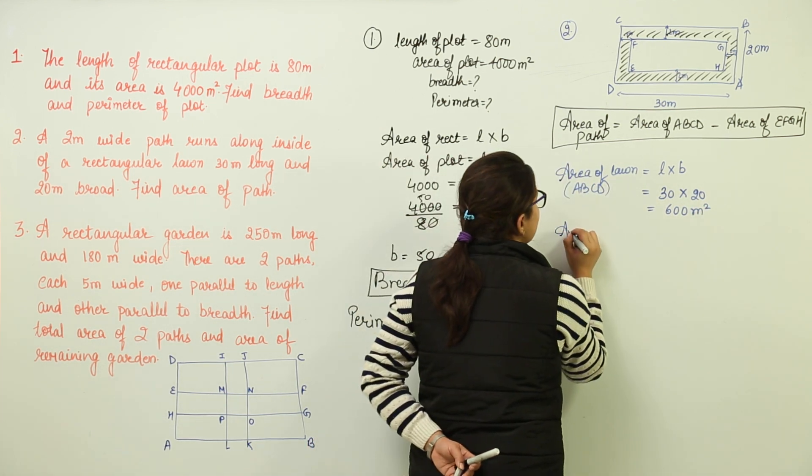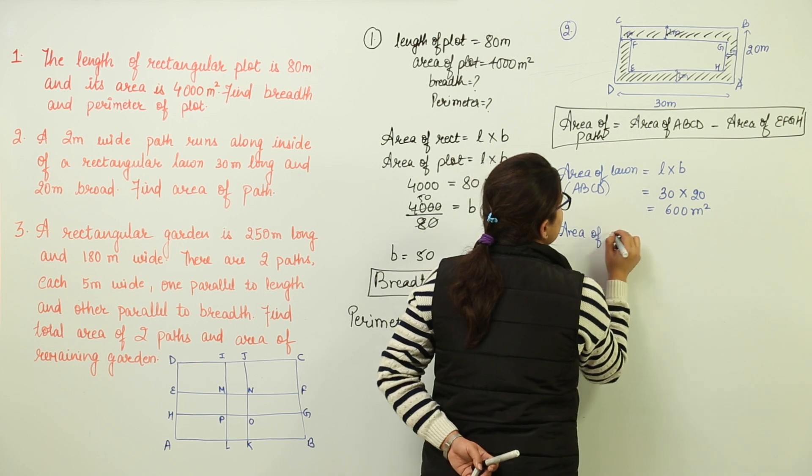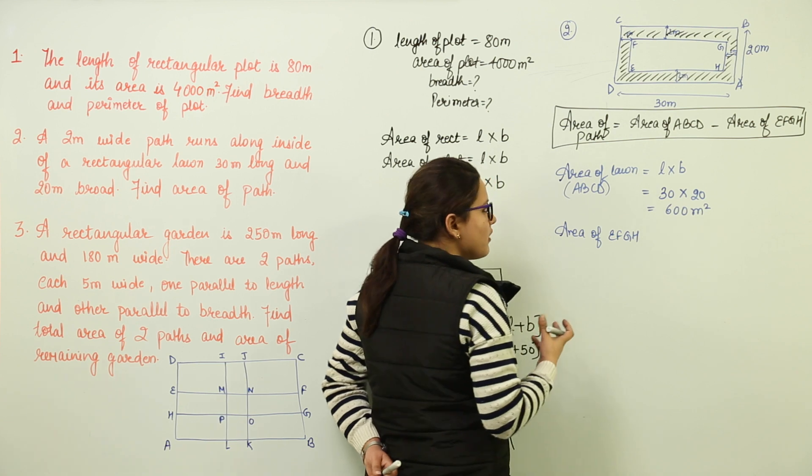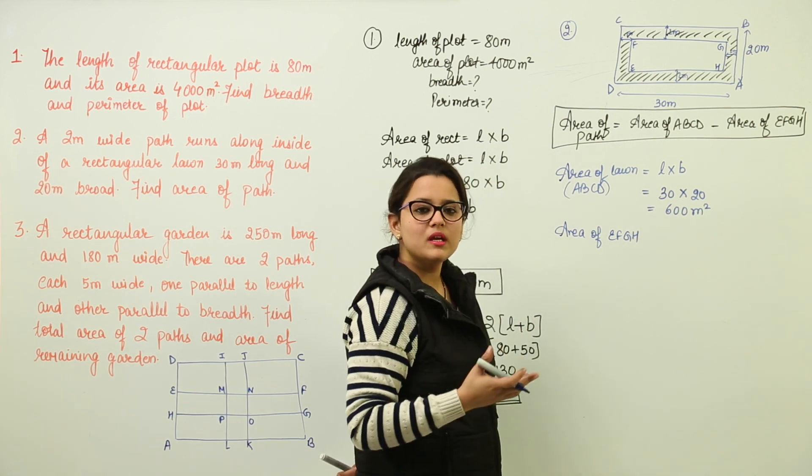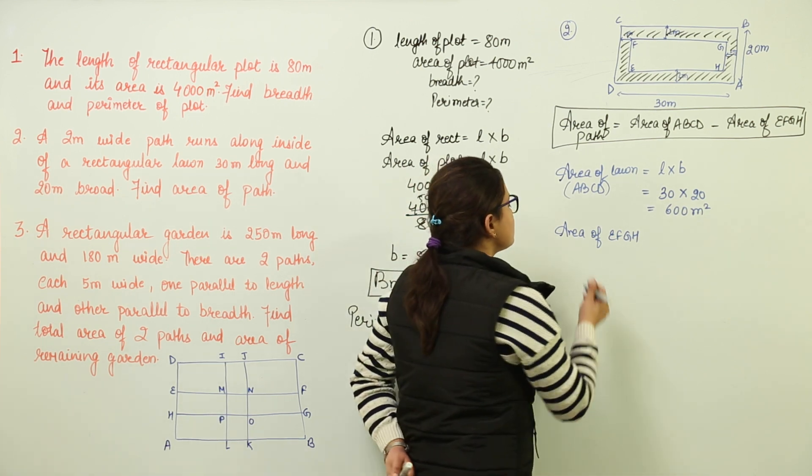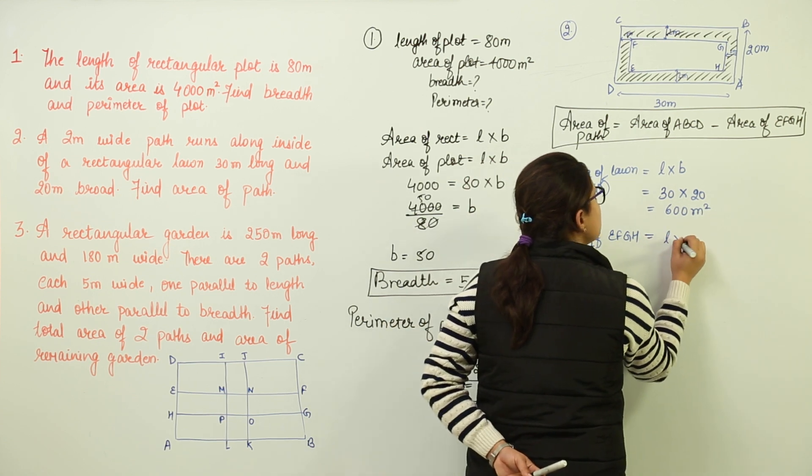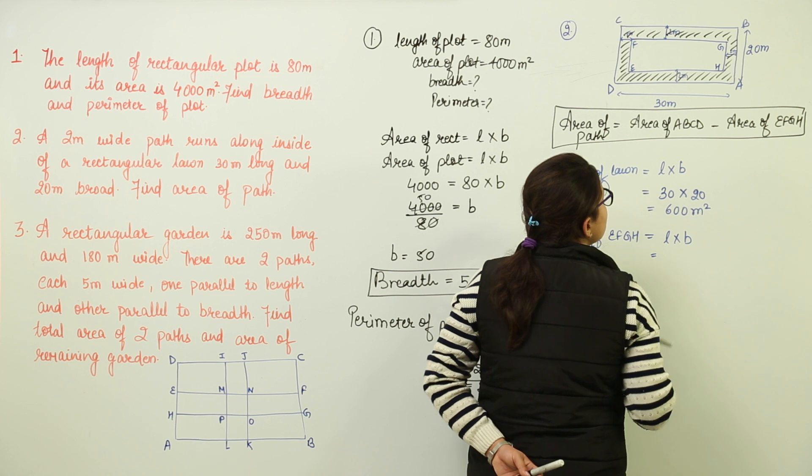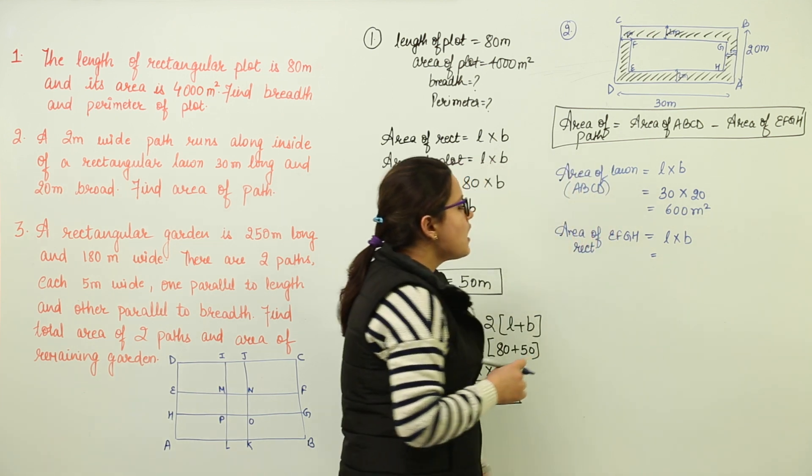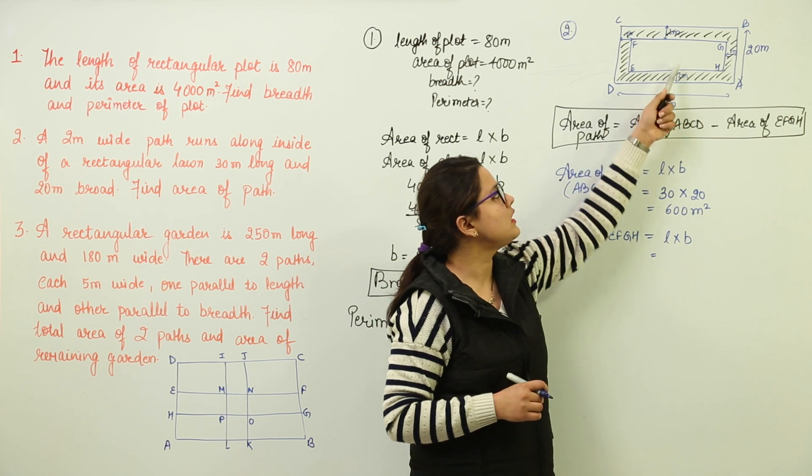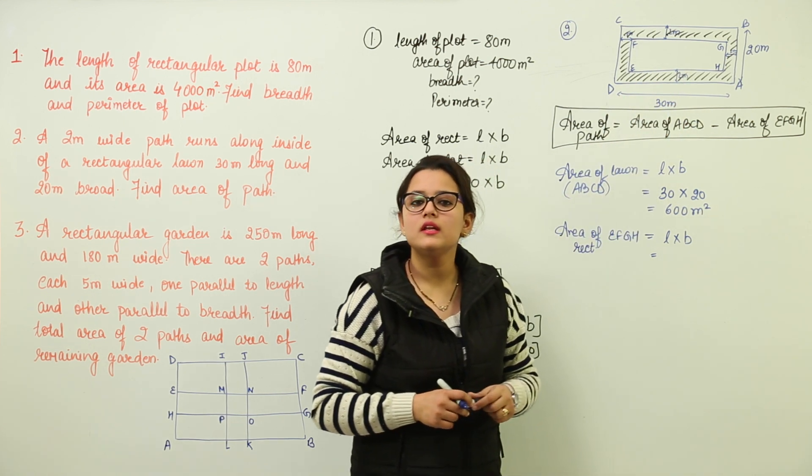Moving to the next one, we have area of EFGH. Because we do not have any such name given to that place, we can name it as rectangle, right? So you can write area of rectangle EFGH would also be equal to length into breadth. And now the twist comes. How will you find out the length and breadth? Because here we are not given any such data regarding the length and breadth.